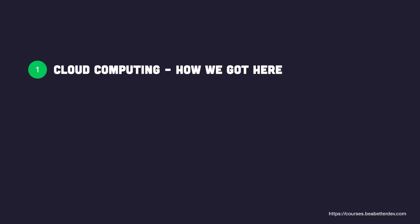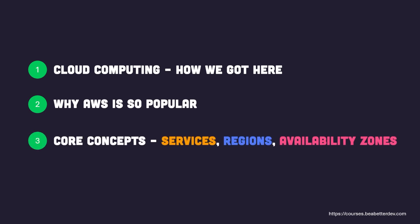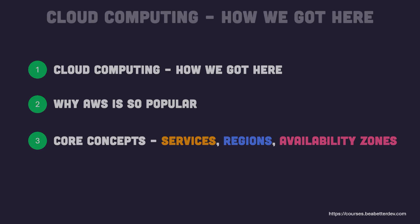First, we're going to cover cloud computing in general, in terms of how it's evolved and how we got to where we are today from a historic perspective. This is going to dovetail nicely into our second topic, which is why AWS is so popular in the first place. Finally, we'll talk about three important AWS concepts: services, regions, and availability zones. So without further ado, let's just jump right into it.